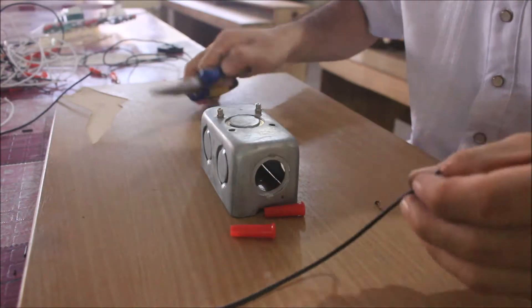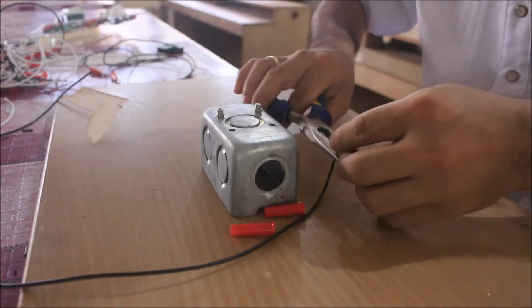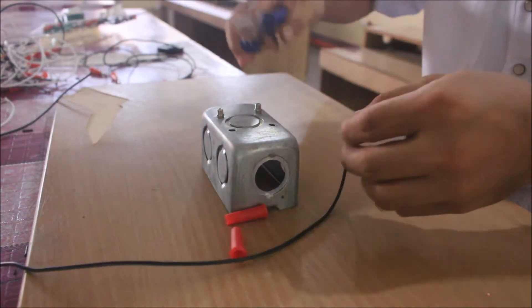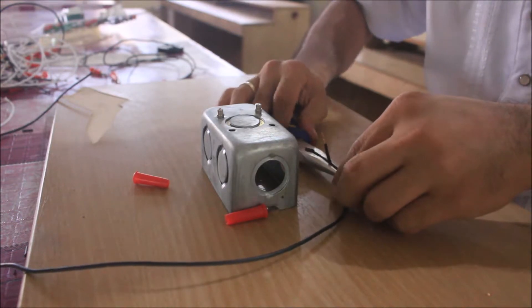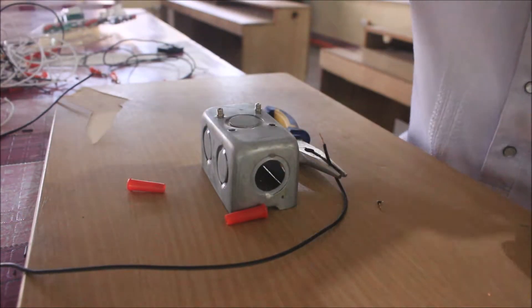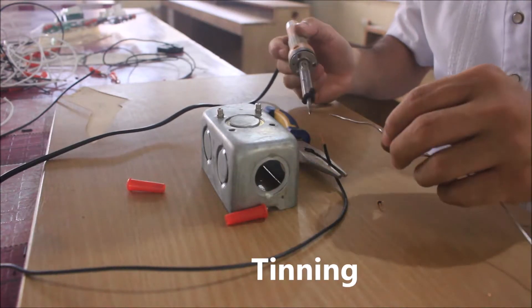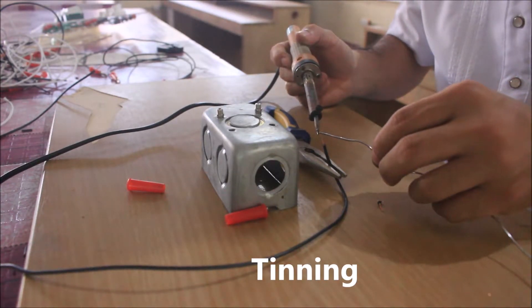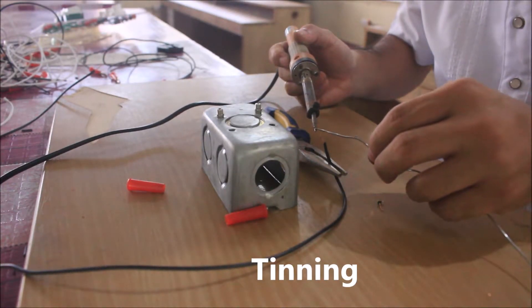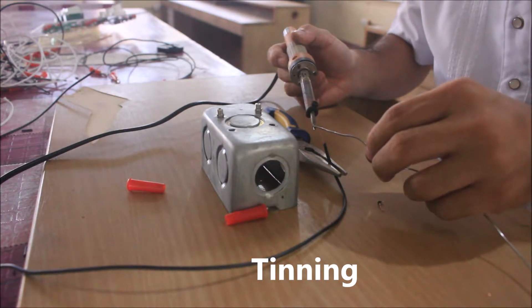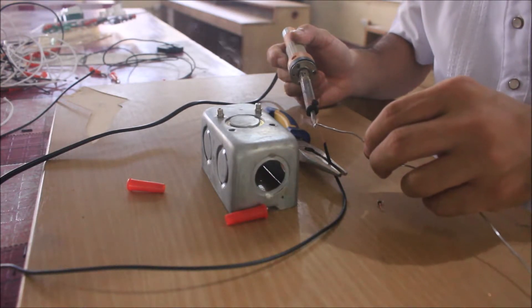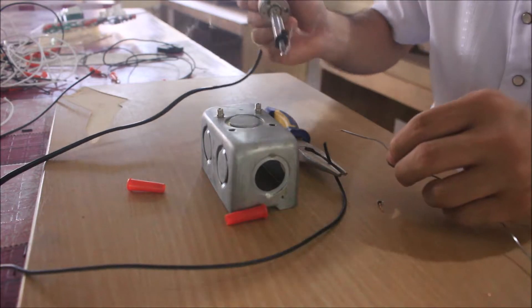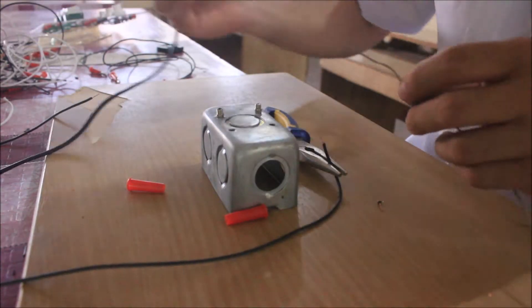Then I used my long nose pliers to hold the wire and then I apply the cleaning process, the process of putting a small amount of solder to the metal or to the conductor before soldering.